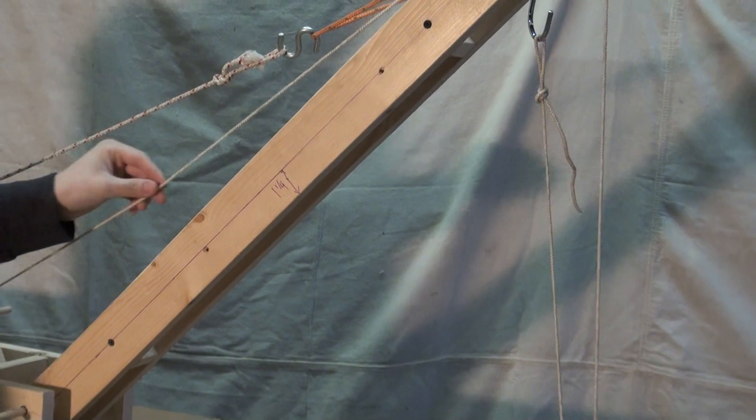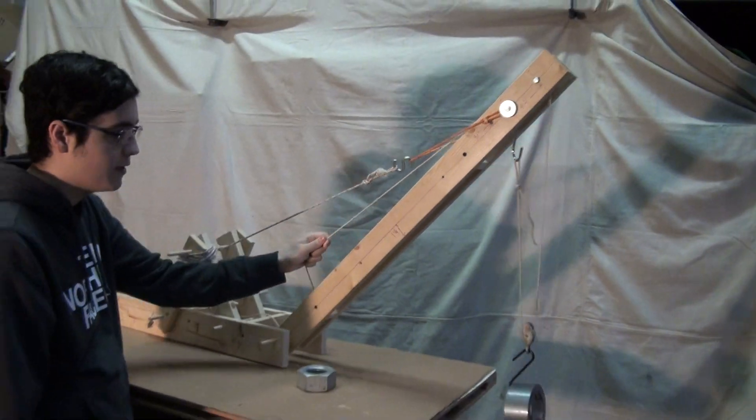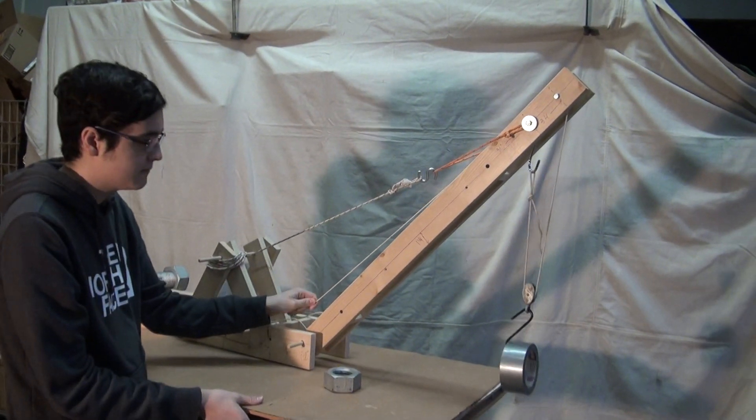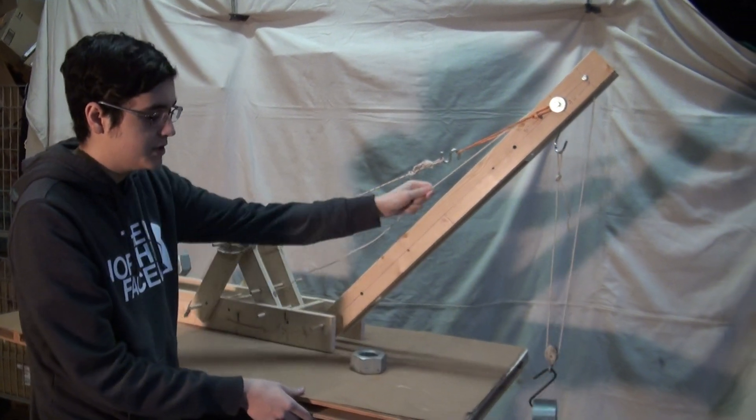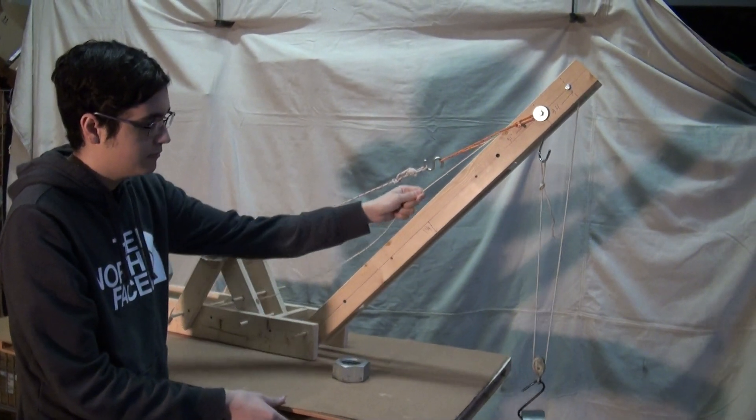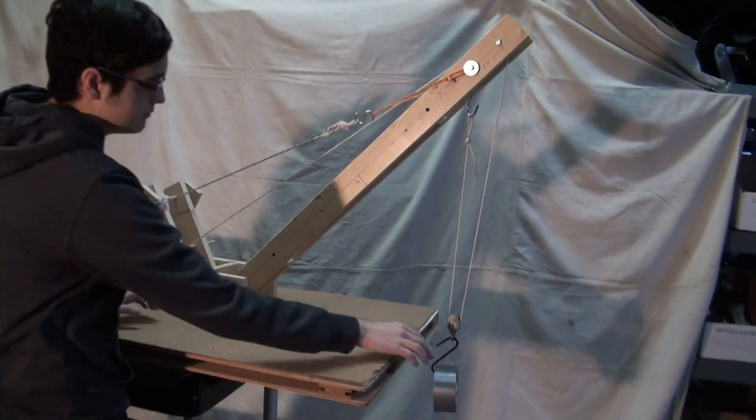The only trade-off is now I have to pull this line twice as far to raise the duct tape the same distance. Well, there is no free lunch. But it is much easier. Even with friction, it's much easier. So, that's called two parts of line.